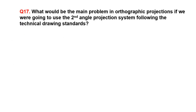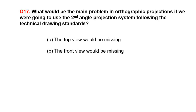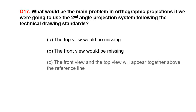What would be the main problem in orthographic projections if we were going to use the second angle projection system following the technical drawing standards? A. The top view would be missing. B. The front view would be missing. C. The front view and the top view will appear together above the reference line.